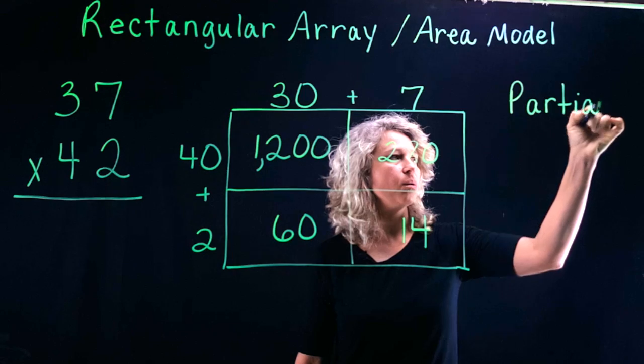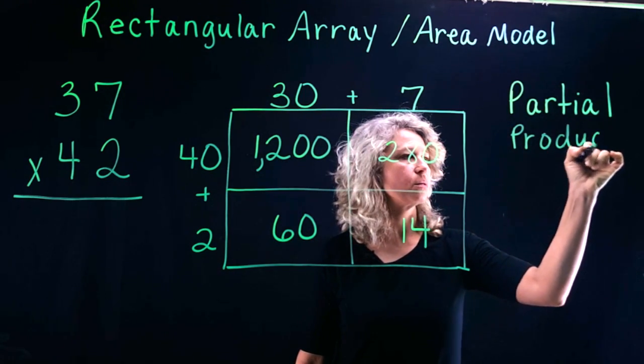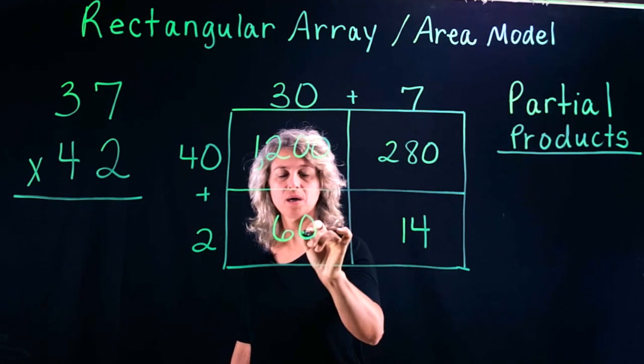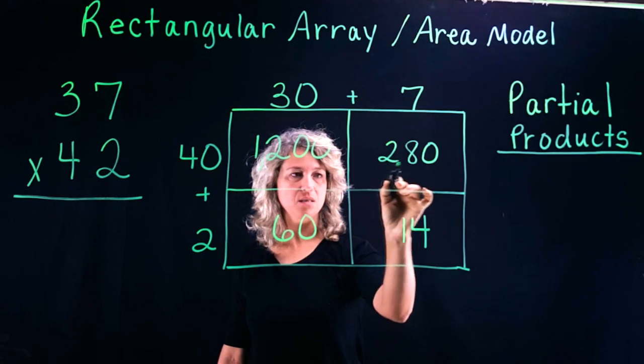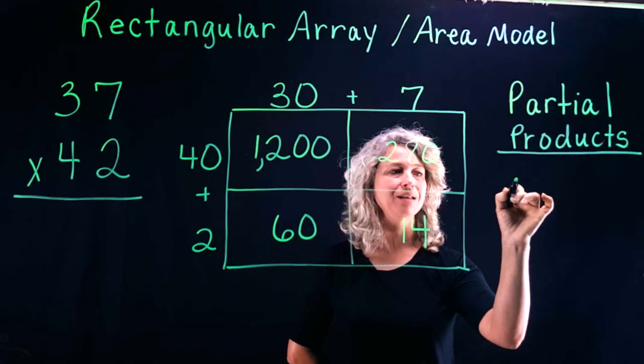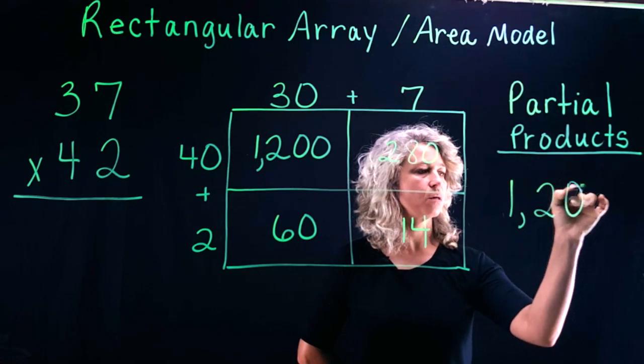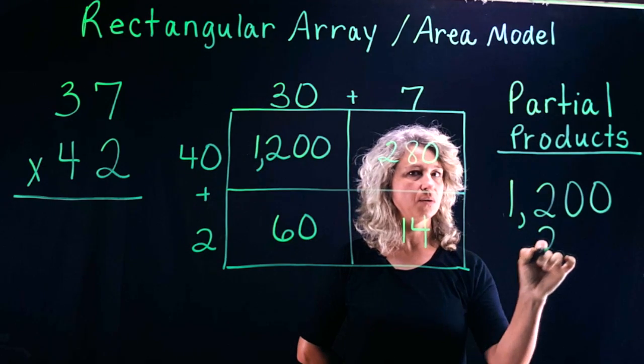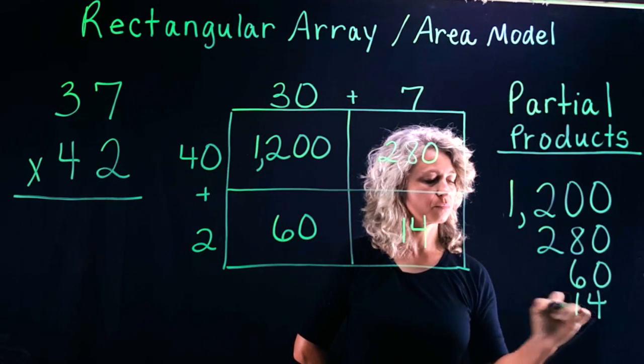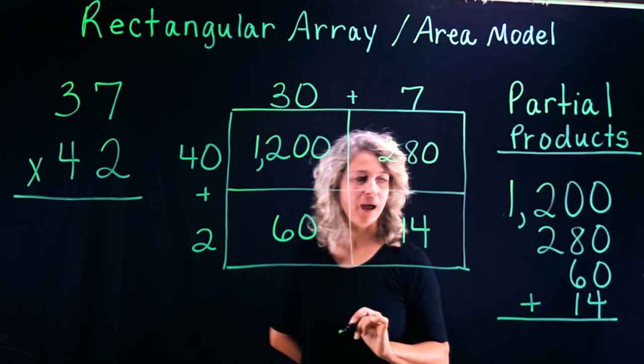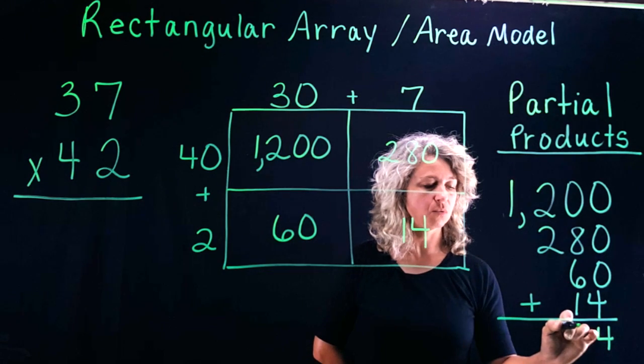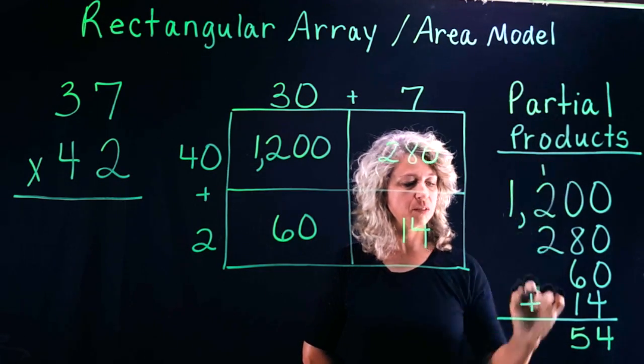And then the last box is 2 times 7, which is 14. Now, here is a very important word: partial products. So we have four partial products here—1200, 280, 60, and 14. We are going to take these four partial products and line the digits up and add those numbers together.